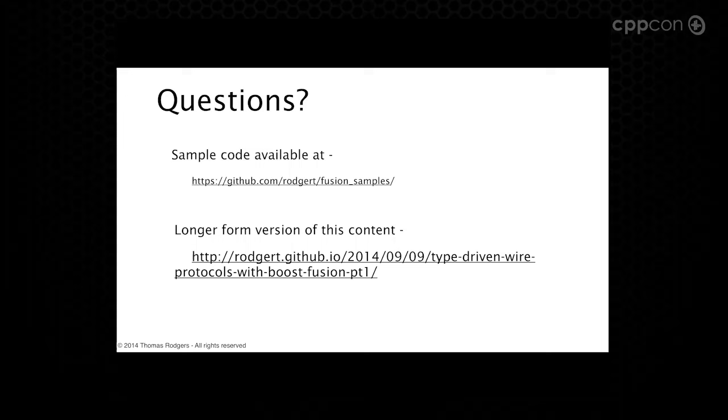An audience question asks about session-wide context passed into the reader. You just take it by reference on your read or write call and pass it through to the reader or writer type underneath. They're temporaries, so no need to copy. This is actually done in real code; it was skipped here because it would further obfuscate what's already somewhat complex.